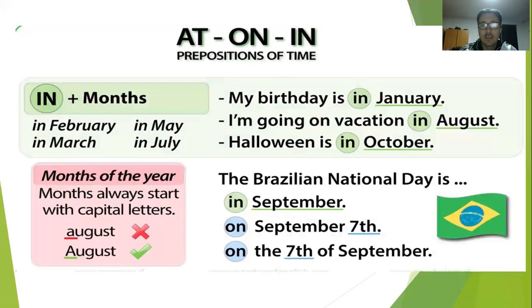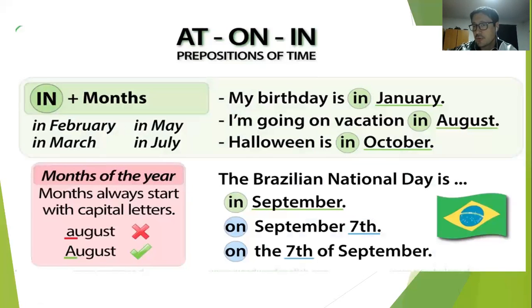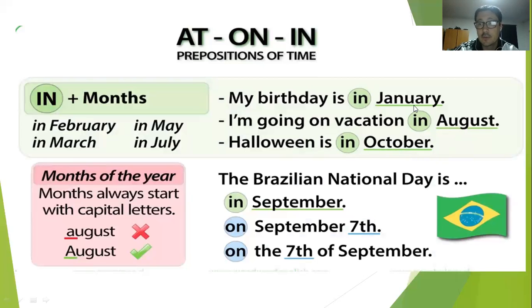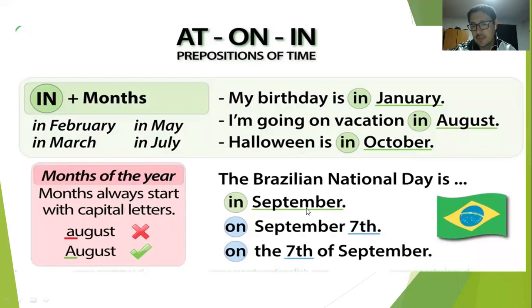Next one — el último, el que tiene más usos: in. We use in for months — primer uso para meses. No es lo mismo que una fecha; estoy solo nombrando el mes: in January, in August, in October. Cuando menciono solo el mes, ocupo in. Si menciono la fecha, por ejemplo September 7, ahí ocupo on. Si el mes está solito: in.